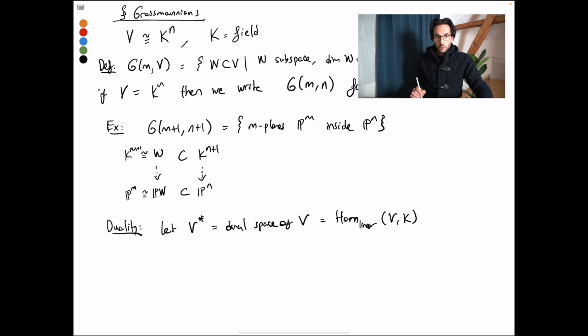Then we have the following kind of duality between the Grassmannians. If I go from G(m,V) to G(n-m,V*), where I take a subspace and I map it to the annihilator of this subspace in V*.